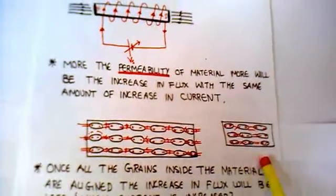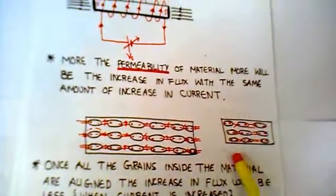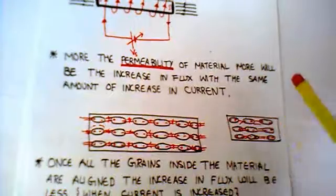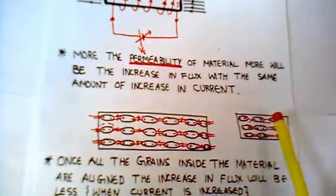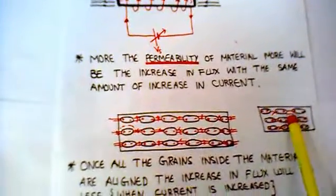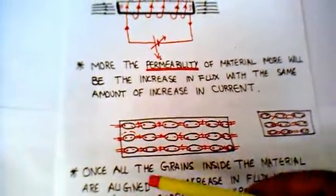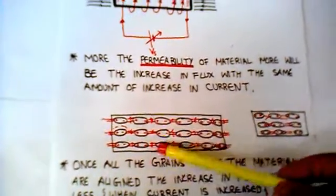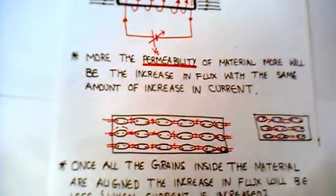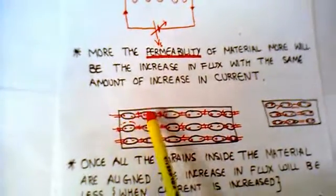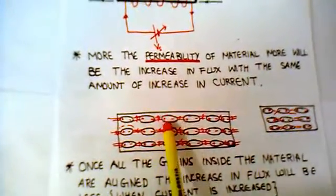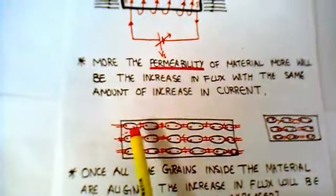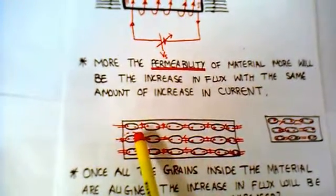But in a normal condition, the flux that is coming out through this piece of iron or any material is zero. That means the net flux during any normal condition is zero. But if there is a winding and I increase the current, these small electromagnets or these grains align themselves in such a direction as to increase the net flux.